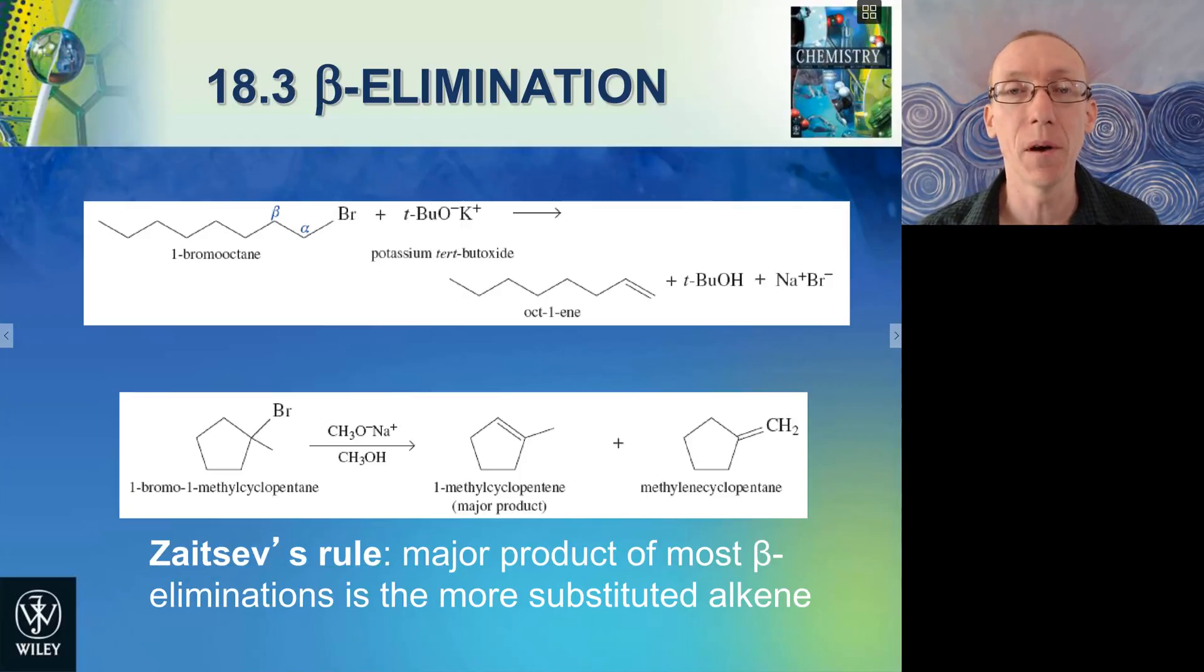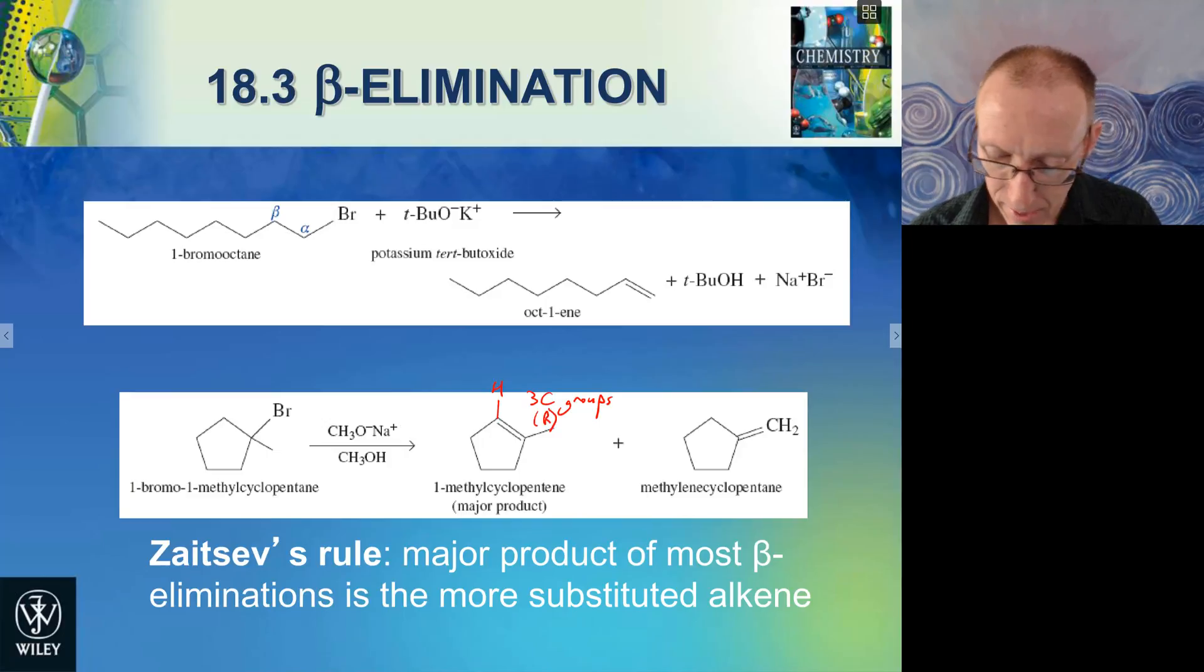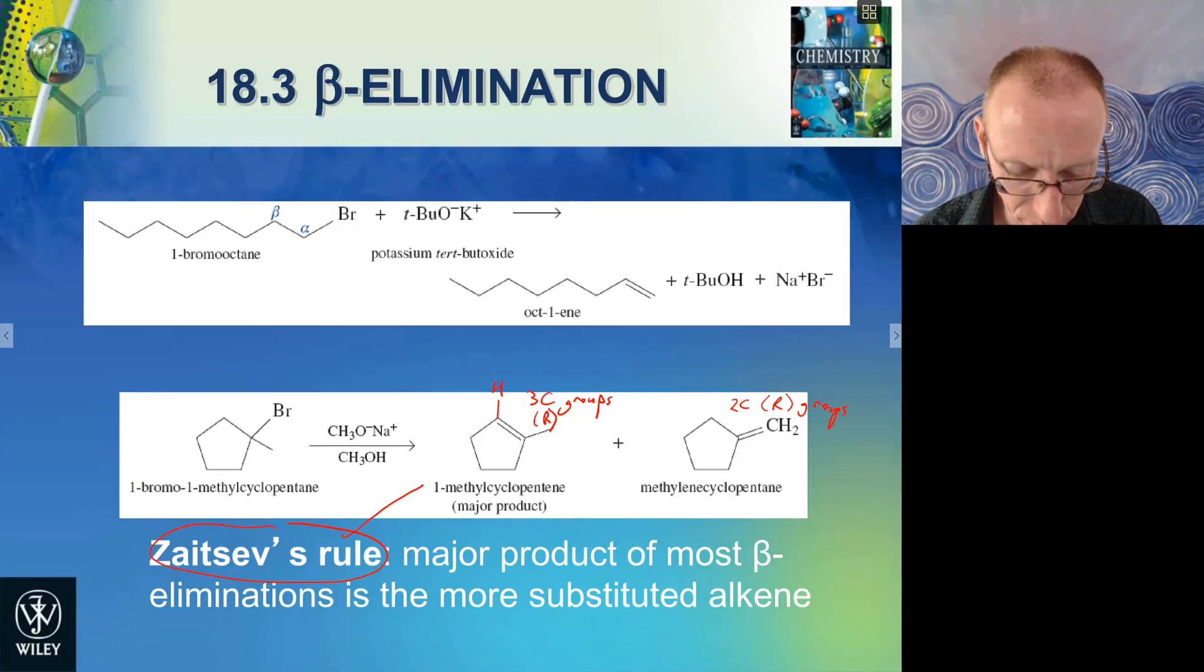So the rule is the major product of most of these beta elimination reactions is the more substituted alkene. So what do we mean by more substituted? Here we've got an alkene with one hydrogen and three carbon-centered groups or two or three alkyl groups. Here we've got an alkene with two carbon or alkyl groups. And so therefore, Zaitsev's rule says that this should be the favored product. And that's a general rule that we can apply to these beta elimination reactions.